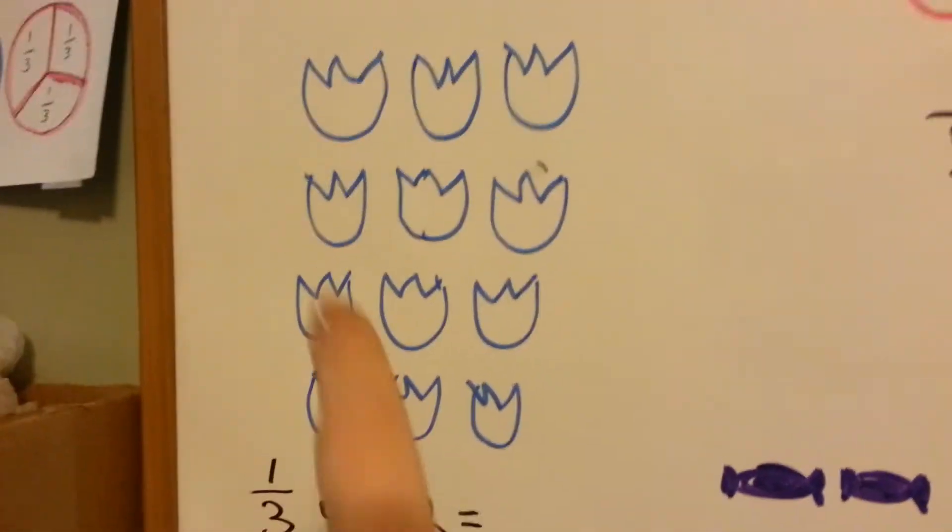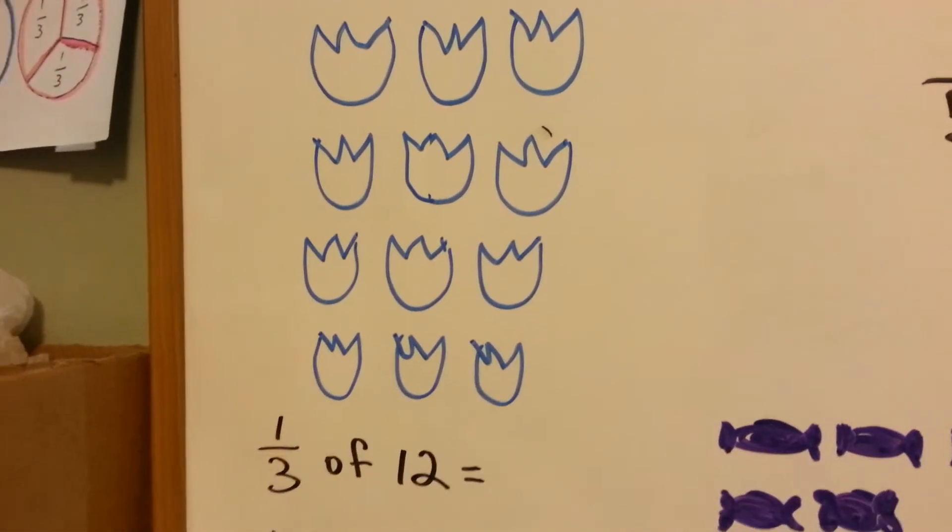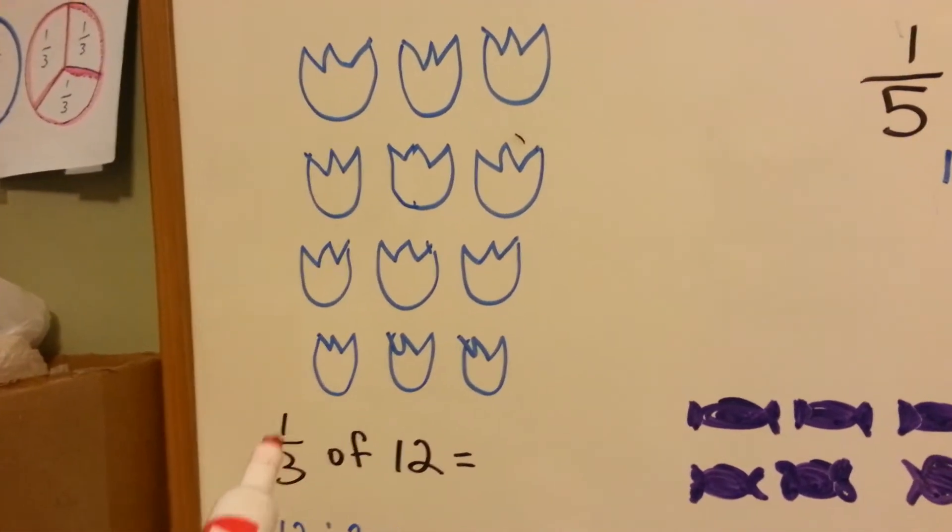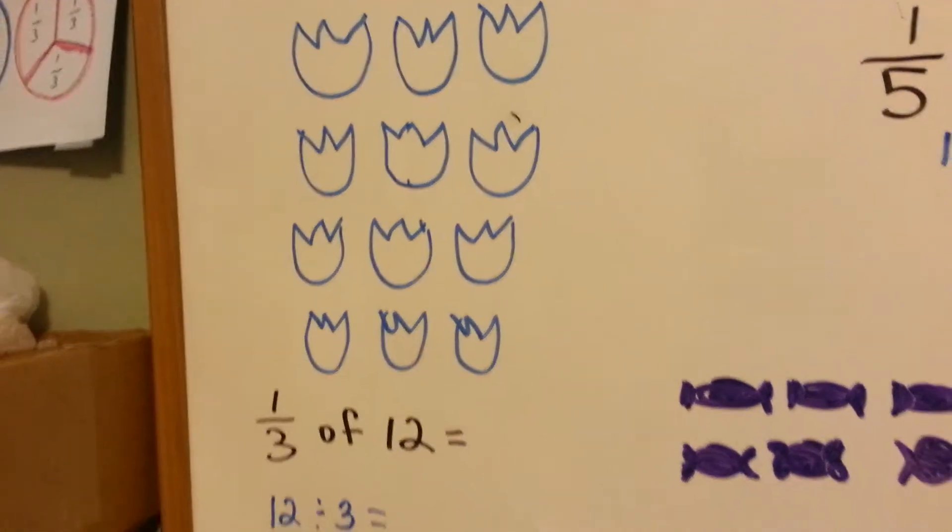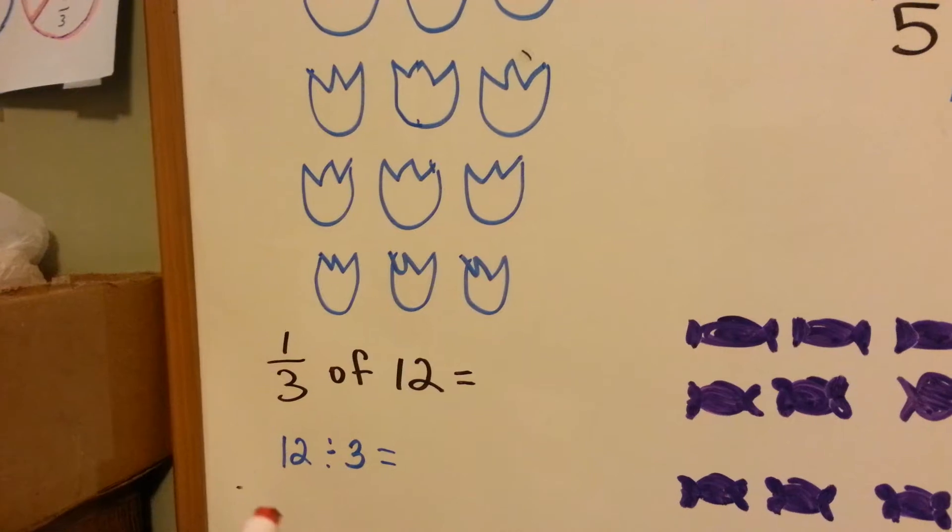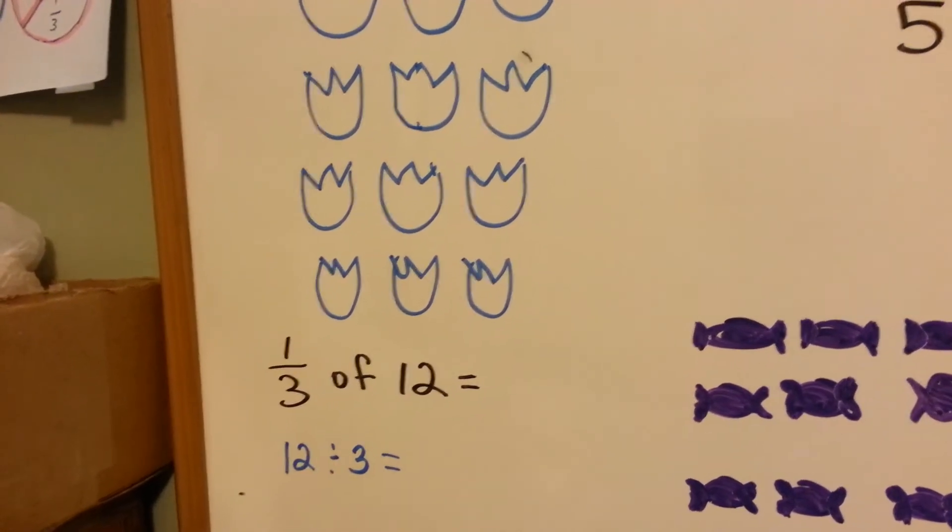We've got 12 blue tulips, and the problem we have is we need to find out what a third of 12 is. So we're going to use division. We're going to say how many times can 3 fit into 12, which is 12 divided by 3.